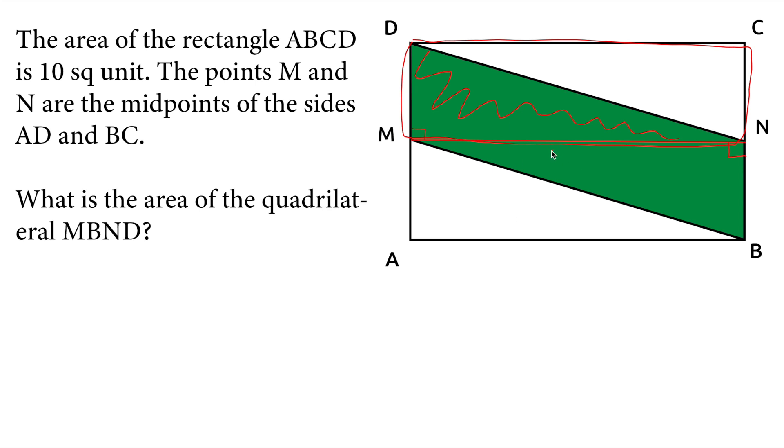Therefore this green triangle and this green triangle will be congruent to each other, and it will be half of the rectangle. The area of the green area will be 5 square units.